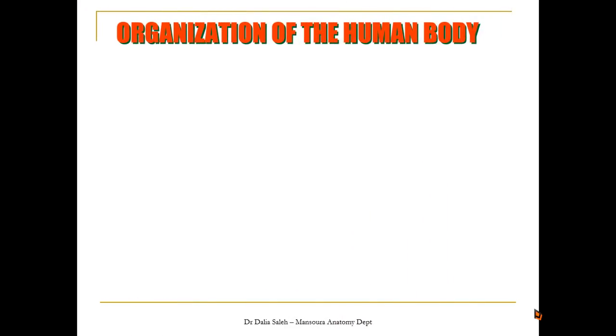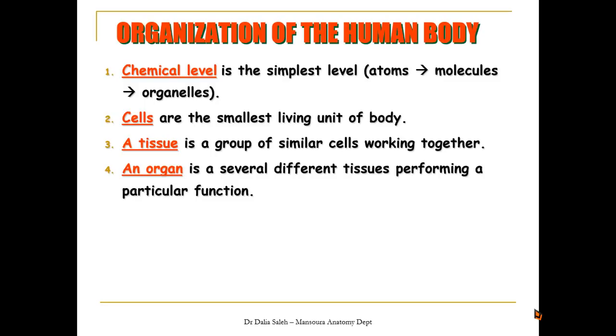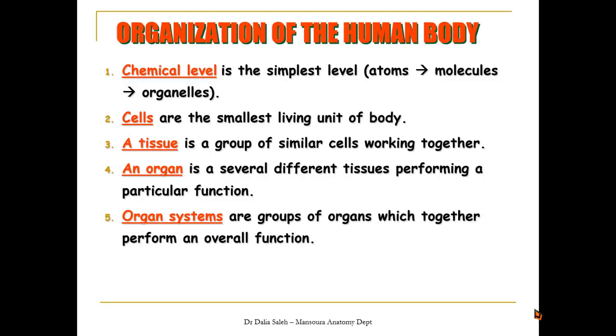For the organization of the human body, on the chemical level, the simplest unit is the atoms. They collect together to form molecules, and the molecules collect to form the organelles. But the smallest living units inside our body are called the cells. When similar cells group and work together, we have what's called tissue. When different tissues group together and perform a particular function, we call it an organ. When different organs group together and perform an overall function, we call it organ systems. And the total organism or the human body is made of different organ systems.